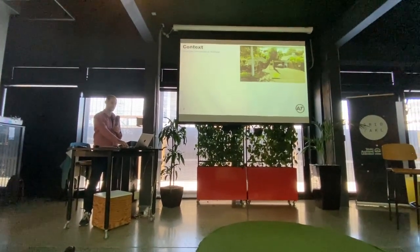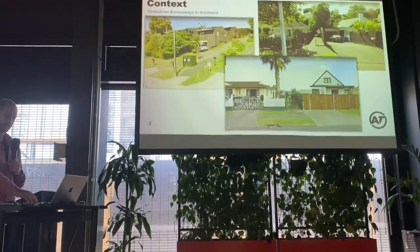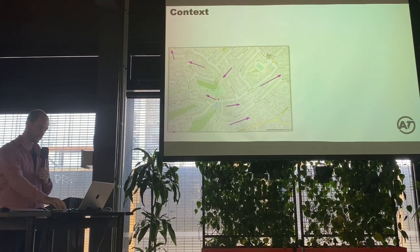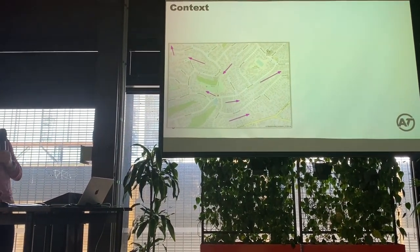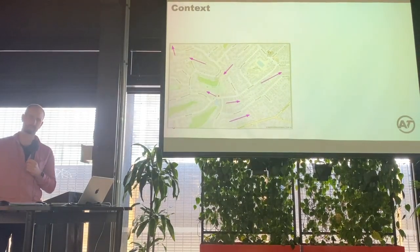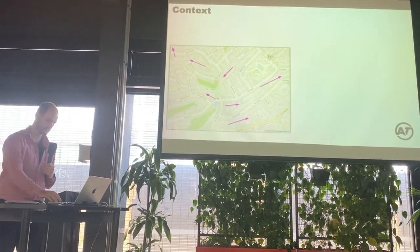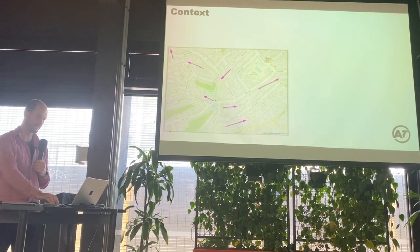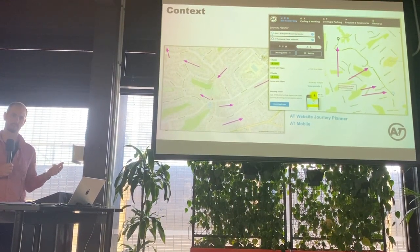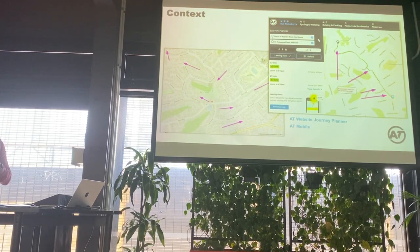These are the sorts of accessways I'm talking about — pedestrian shortcuts in residential areas that can save you a lot of time getting from A to B. They're actually already really well mapped in OSM; all those arrows are pointing to a few in an area of the North Shore. But as I was mapping around Auckland I'd occasionally find one that wasn't mapped, so I wanted to be more systematic. Fixing these would improve our journey planner and AT mobile apps, which use the OSM network for routing, especially pedestrian and cycle routing. Here's an example of a route that uses these accessways.